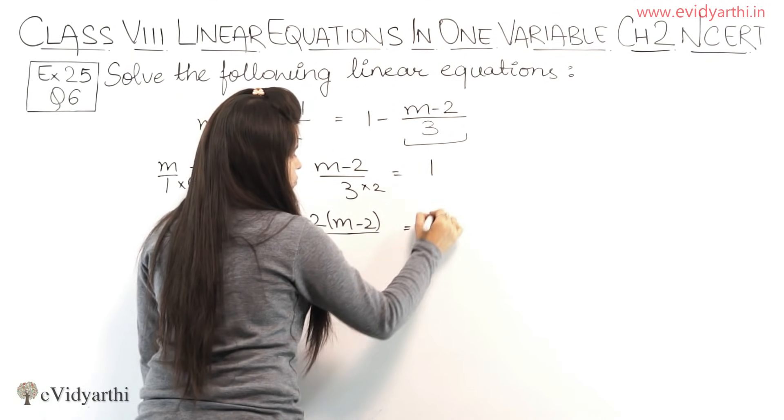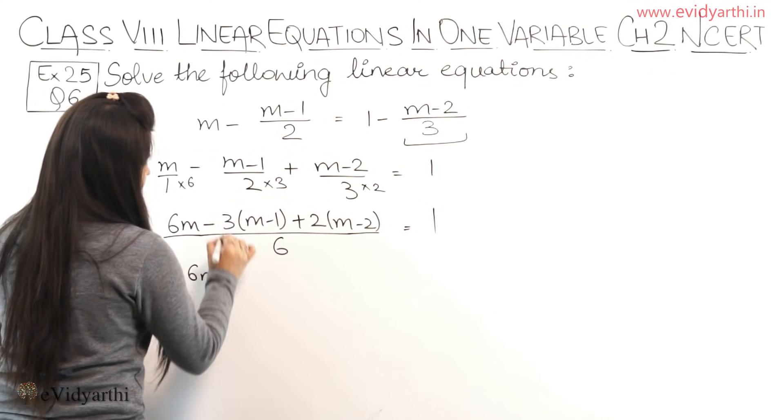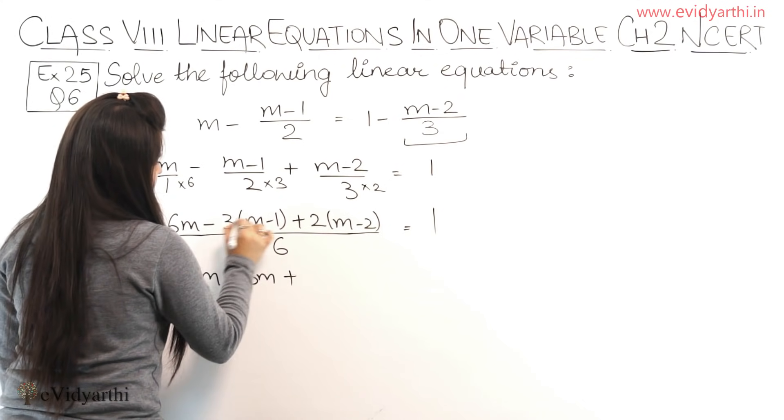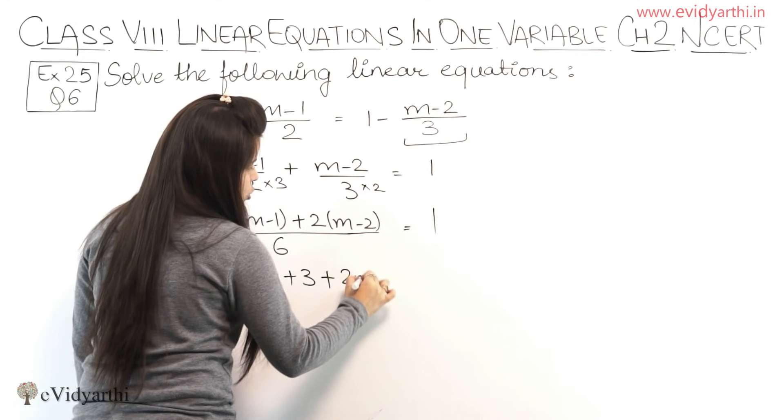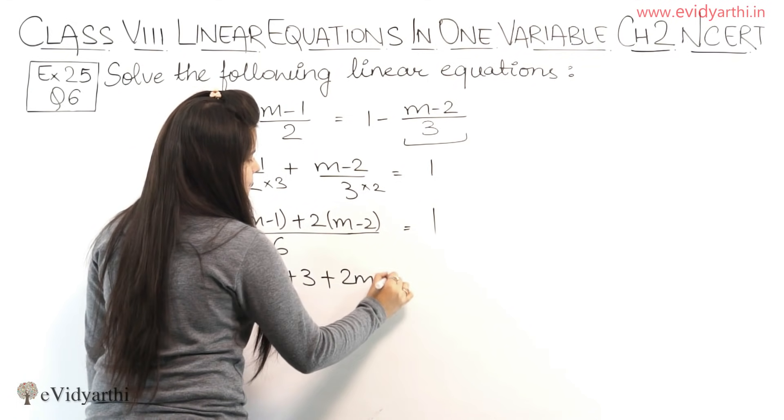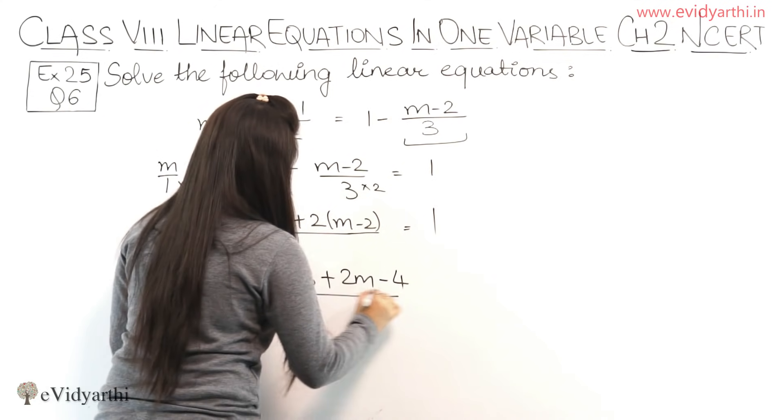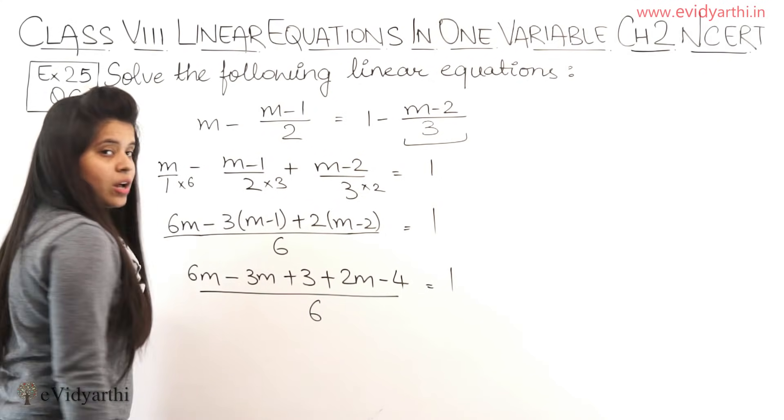And this equals 1. Now we'll solve this. Here we have 6M minus 3M minus 3 plus 2M minus 4 upon 6 equals to 1.